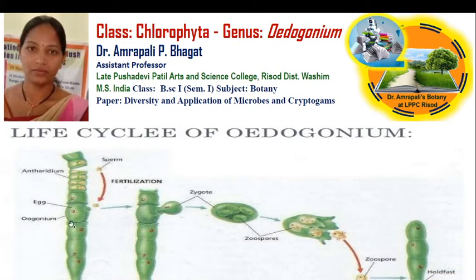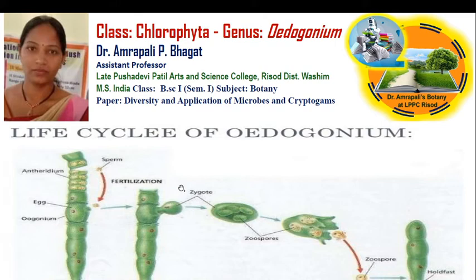Here is a diagram which can give you an idea about what is meant by Oedogonium, how the thallus has a structure, how it can be fertilized, how the formation of a zygote occurs, and later on how that zygote develops into a zoospore and the zoospore germinates into a new plant. In this way, we are going to learn about the life cycle of Oedogonium.